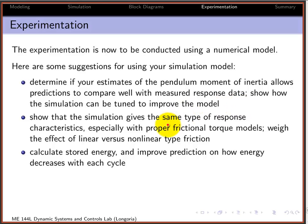But also, we want to show what kind of friction torque models are dominant. Do we use a linear damping or a nonlinear kind of coulombic type friction? You can also do other things like calculate stored energy and try to improve your prediction of how the energy decreases each cycle.